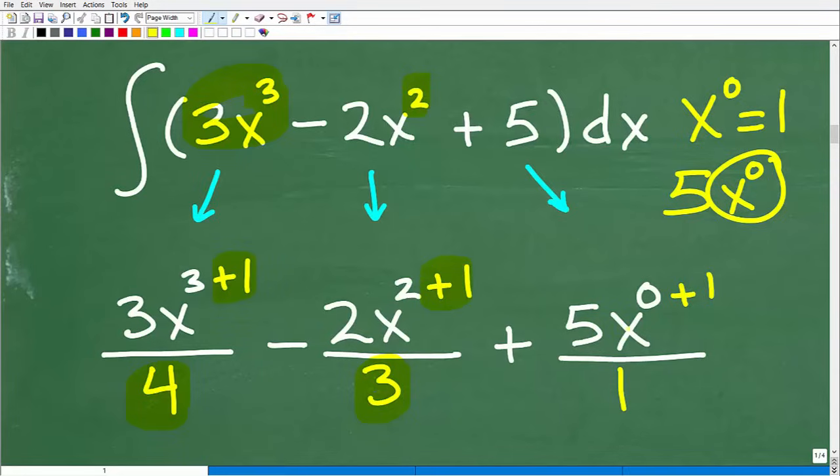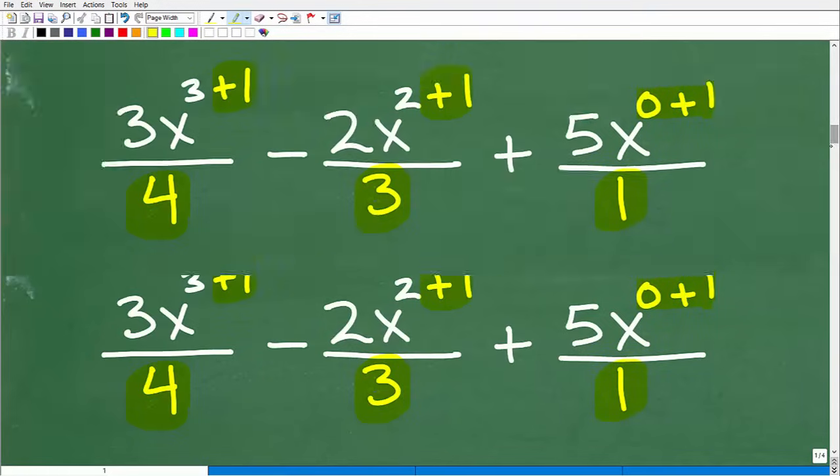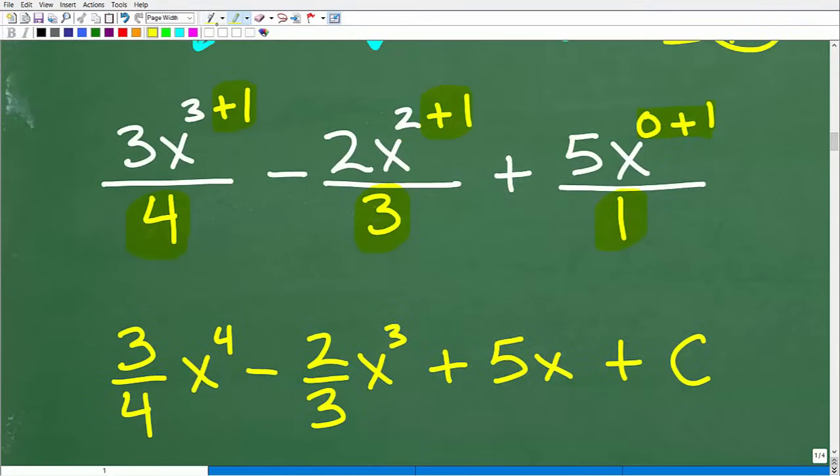In calculus, we think of this as x⁰. We're going to add 1 to that x⁰. So x⁰ plus 1 is 1, we divide it by 1. The result is: ¾x⁴ minus ⅔x³ plus 5x divided by 1, which is 5x.